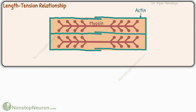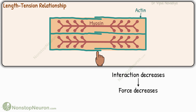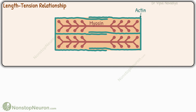But with further shortening, the opposing actin filaments start overlapping. The spatial relationship between actin and myosin starts getting distorted. Because of this, the chances of actin-myosin interaction actually start decreasing — in simple words, fewer myosin heads can interact with actin. So the force also decreases, and with further shortening, the force keeps decreasing.